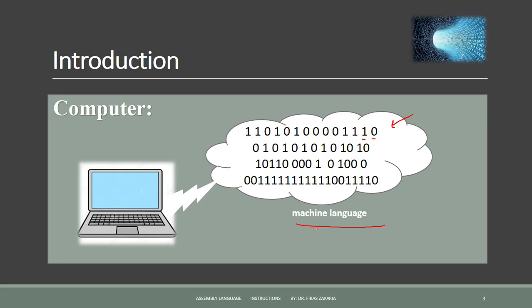For some types of languages, in order to talk to a computer, we must first translate instructions to binary — to machine code. Translating a programming language into binary is known as compiling. In most languages, we need to compile our program to translate it into binary, into machine code.